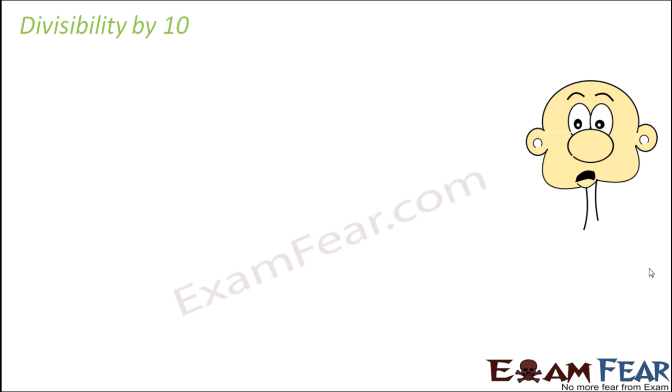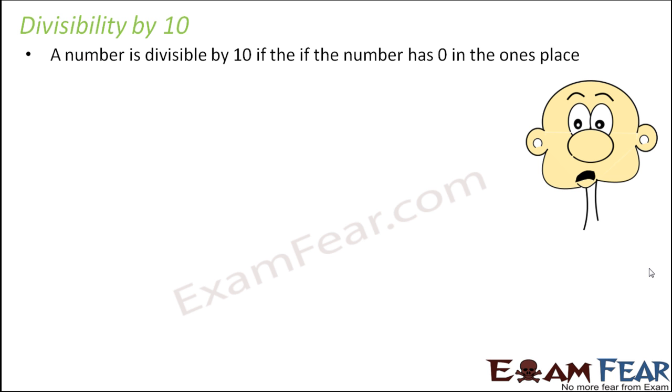In a similar way, we can check for divisibility by 10. So a number is divisible by 10 if the number has 0 in its ones place. So it is all the more simple. You do not even need to search for more numbers. Anything ending with 0 is divisible by 10. So this rule obviously has also come up on similar lines looking at the multiples of 10. So when you look at the multiples of 10, what do you see? All of them end with a 0.